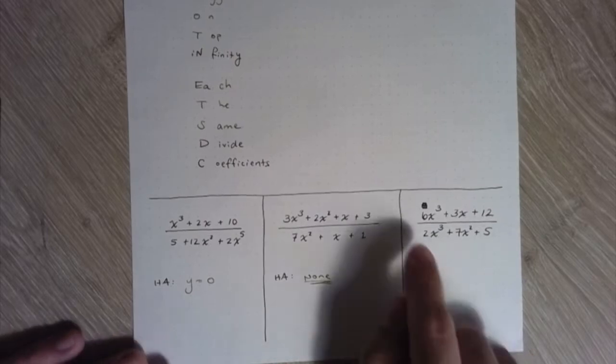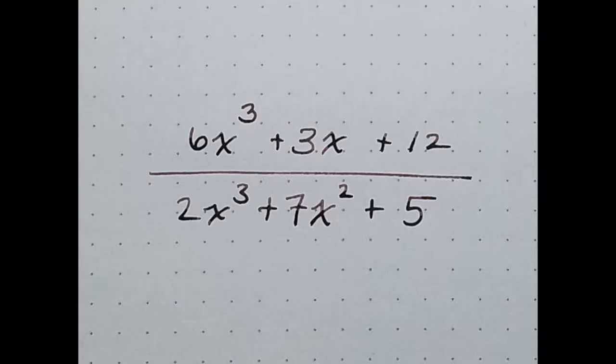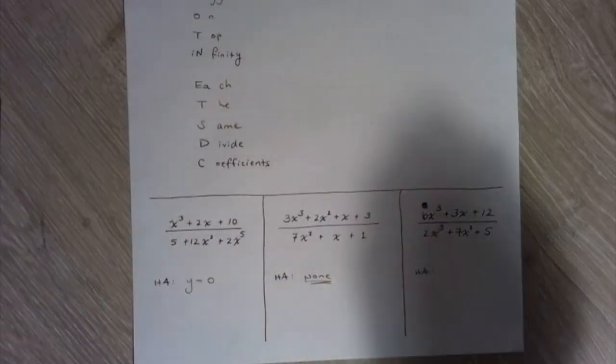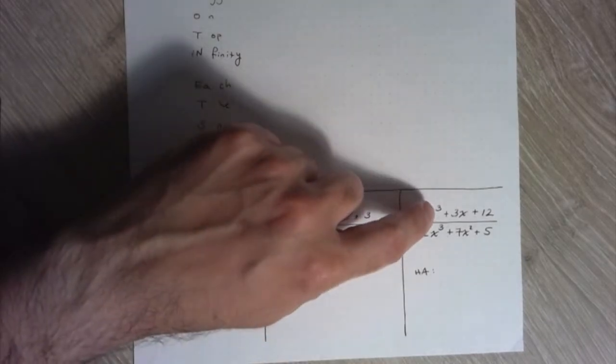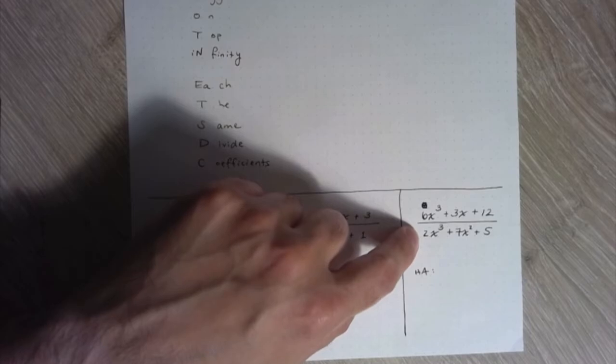Okay, last but not least, we have 6x cubed plus 3x plus 12 divided by 2x cubed plus 7x squared plus 5. So we identify the largest exponent. So here we have a 3 on top, largest exponent, largest exponent on the bottom is also 3.